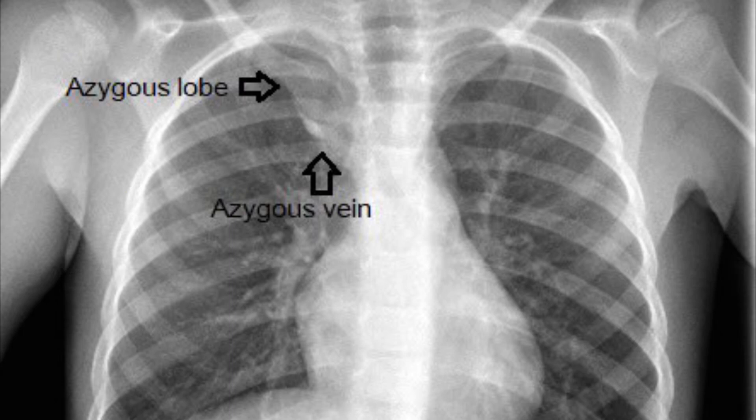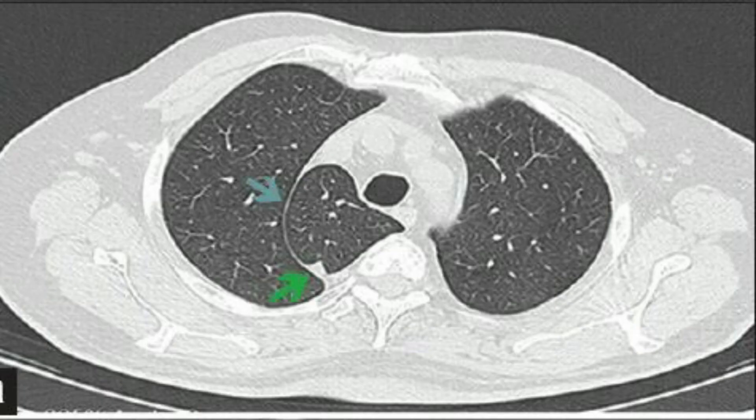On chest X-ray or CT, the Azygos fissure appears as a thin curvilinear density in the right upper lobe with convexity facing towards the chest wall. At its base, Azygos vein appears as a teardrop-shaped opacity.